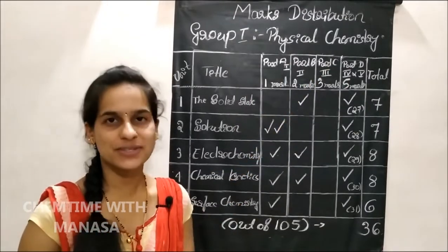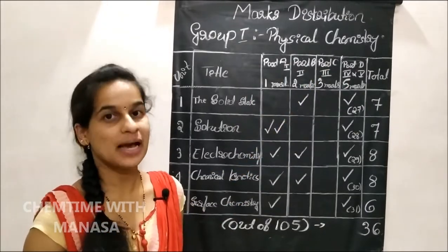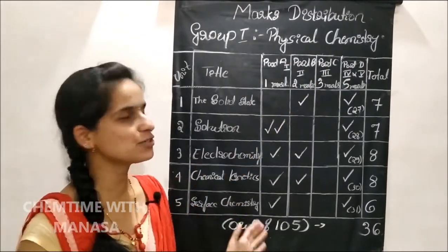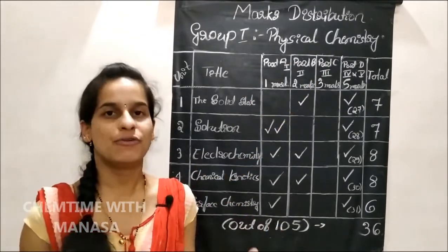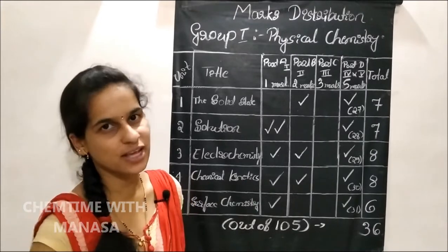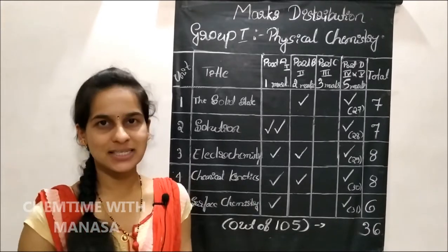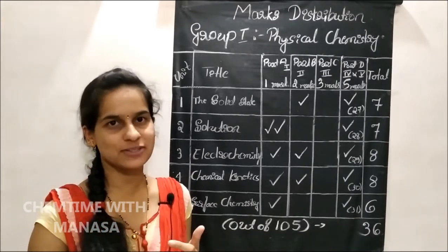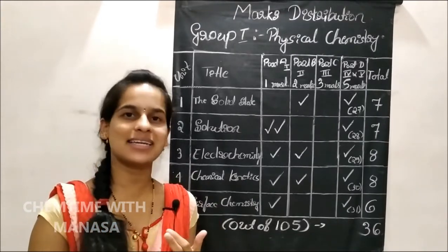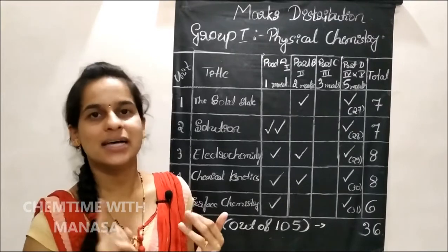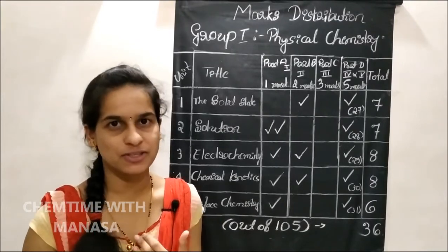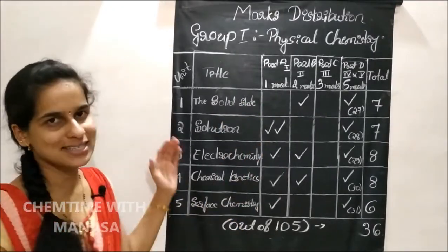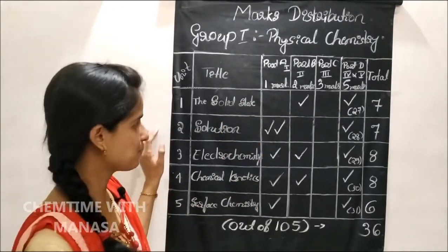Friends, first let us consider physical chemistry. In your syllabus, there are 5 chapters in physical chemistry: the solid state, solutions, electrochemistry, chemical kinetics, and surface chemistry. And the marks distribution list is here.